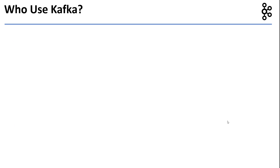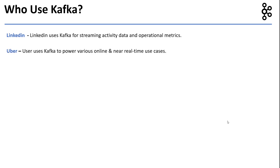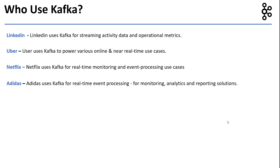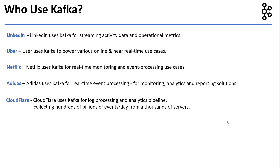Now let's look at some of the companies that use Kafka and how they use it. LinkedIn uses Kafka for streaming activity data and operational metrics. Uber uses Kafka to power various online and near real-time use cases. Netflix uses Kafka for real-time monitoring and event processing use cases. Adidas uses Kafka for real-time event processing for monitoring, analytics and reporting solutions. Cloudflare uses Kafka for log processing and analytics pipelines, collecting hundreds of billions of events per day from thousands of servers.